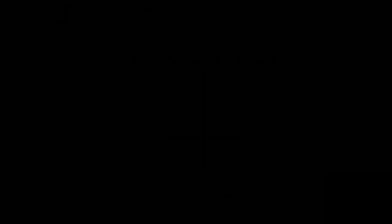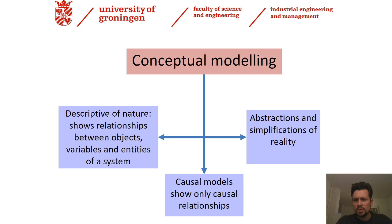Conception modeling could be one out of three, or a combination of any of these three elements. First, descriptive in nature — relationships between objects, variables, and entities of a system, interrelations. It can also be a causal model, where we observe only relationships. Finally, conception modeling is also meant to have abstractions — simplifications of reality. In principle, every model is always wrong, but at least we do our best to have a rigorous approximation of reality.